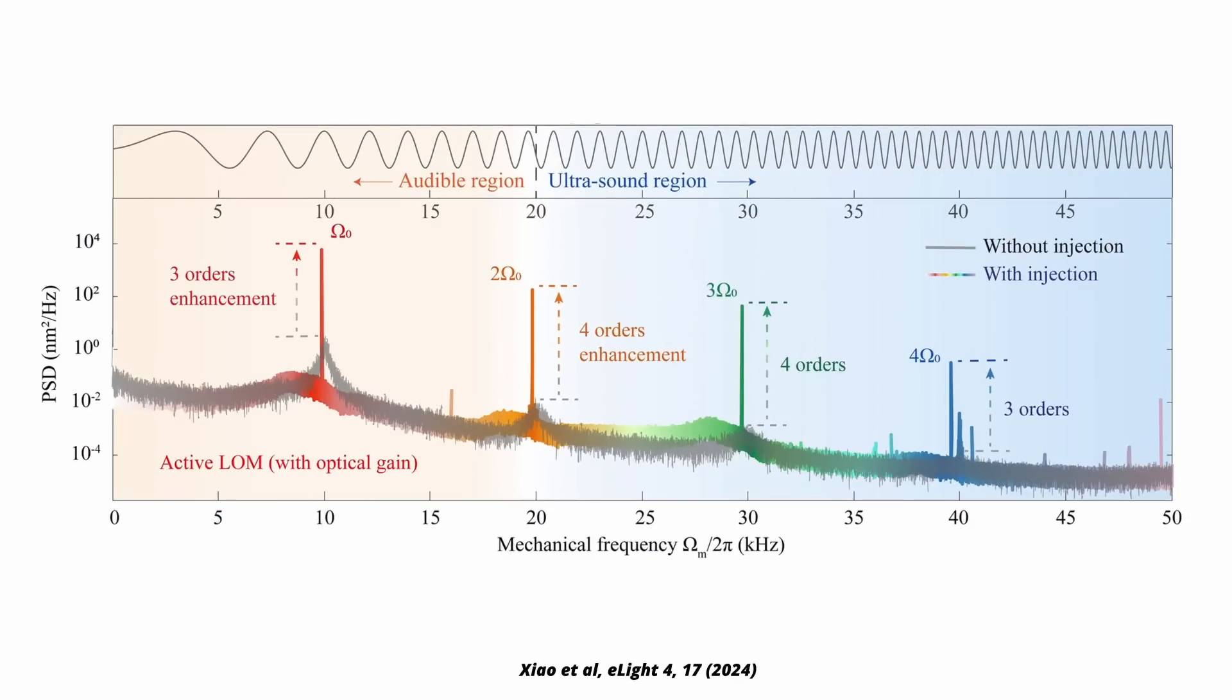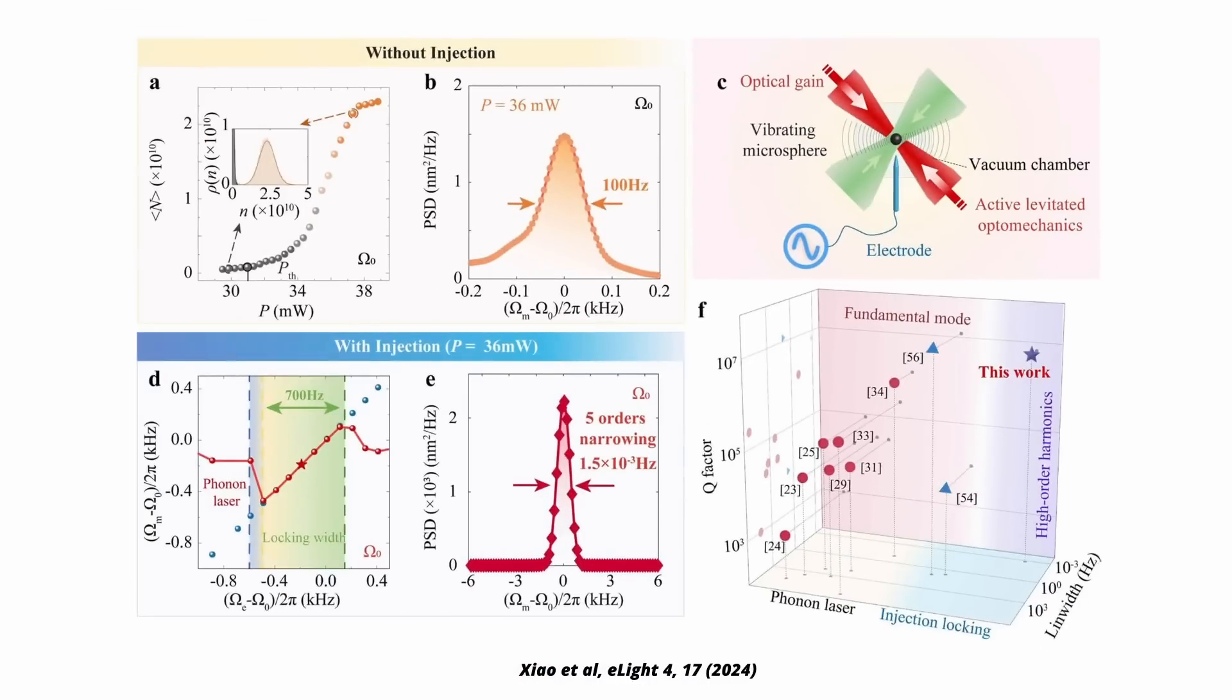You can see this here in this figure that they get this amazingly sharp peak at the resonance frequency. And it's not just that the amplitude is increased, they're also dramatically more narrow. You can see this here in this image for the first peak. That's an improvement by five orders of magnitude. I think they should trademark this as buzzkill. So that's pretty cool.